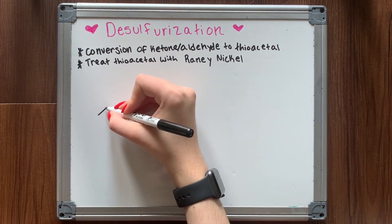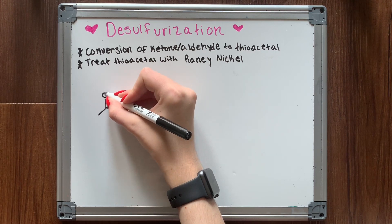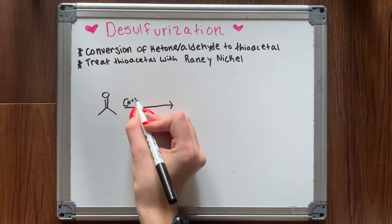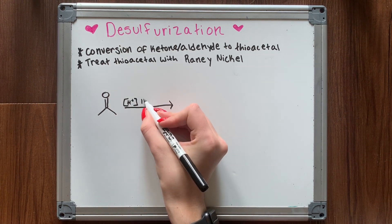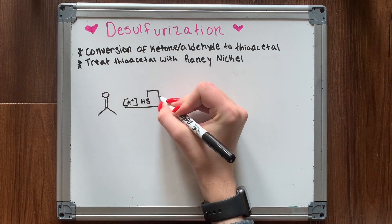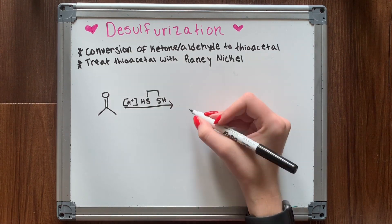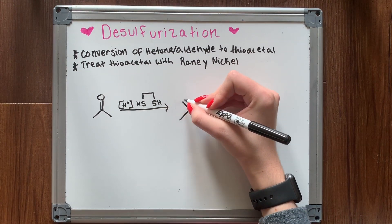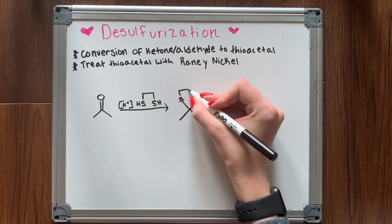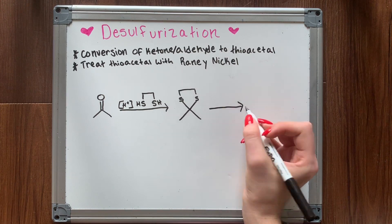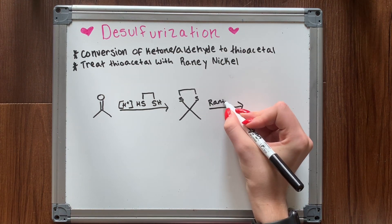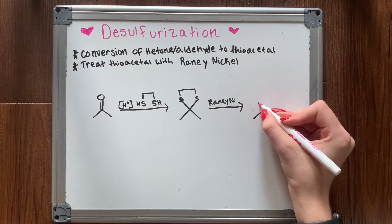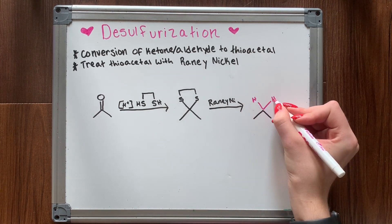Desulfurization. This reduction reaction starts with the conversion of a ketone or an aldehyde to a thioacetal under acidic conditions. Once you have your thioacetal, you treat it with Raney nickel, which is a special reagent that pulls off the thioacetal and leaves you with your desired alkane. This is a very useful reaction to keep under your belt, especially for synthesis strategies.